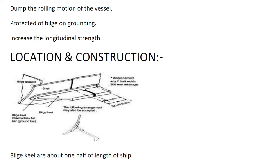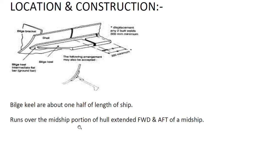This is bilge bracket, this is the shell, and then your bilge keel. Bilge keels are about one half of length of ship, runs over the midship portion of the hull extended forward and aft of midship.